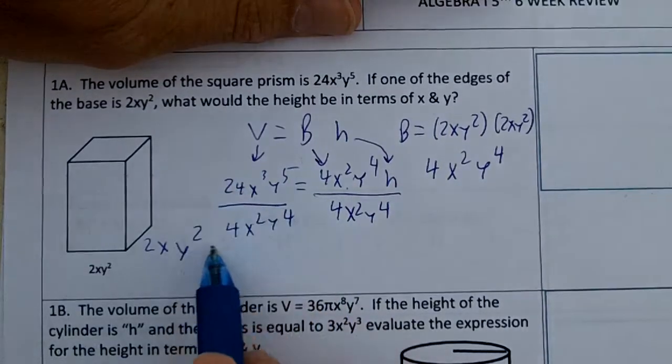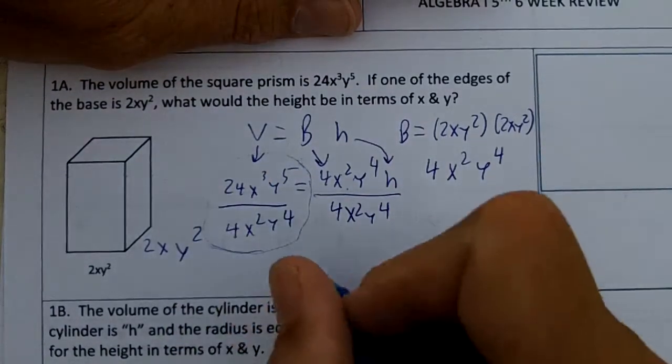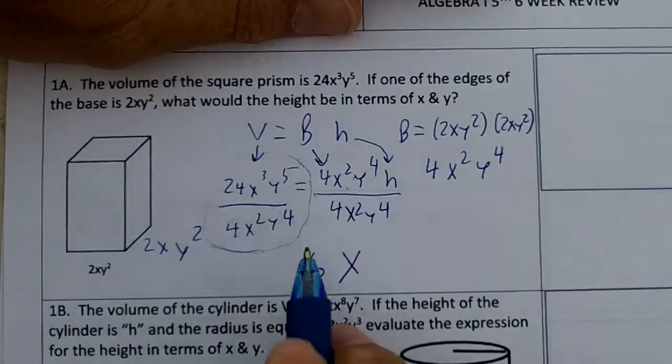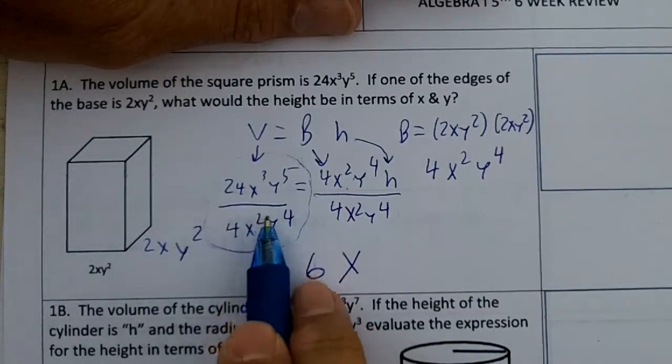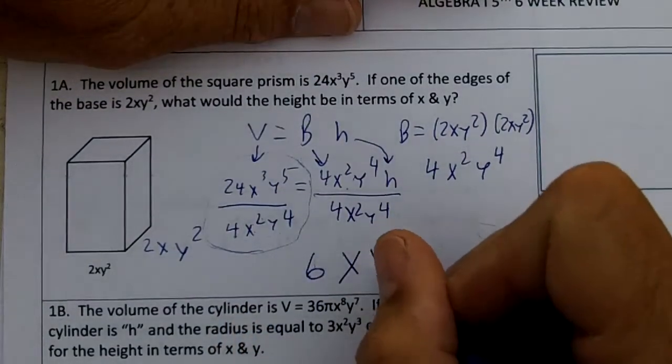This is going to give us the answer. So 24 divided by 4 is 6. x³ divided by x² is x. Remember, you subtract the exponents: 3 minus 2 is 1. y⁵ divided by y⁴ is y.